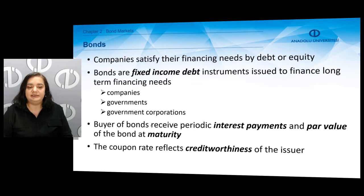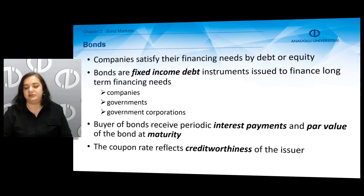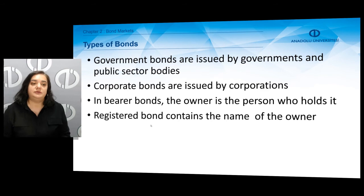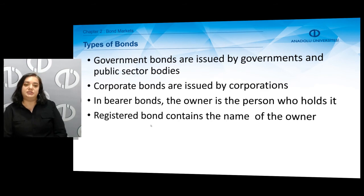The coupon rate of bonds reflects the credit worthiness of the issuer and the riskiness of the bond. The greater the riskiness, or the lower the credit worthiness, the higher the coupon rate. There could be different types of bonds, such as government bonds or corporate bonds.